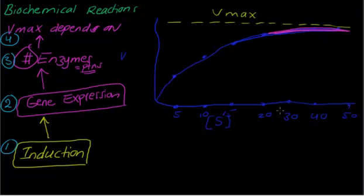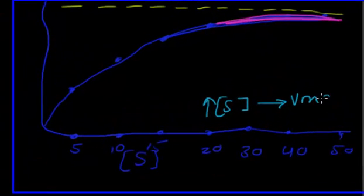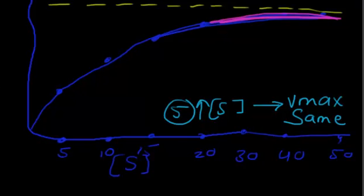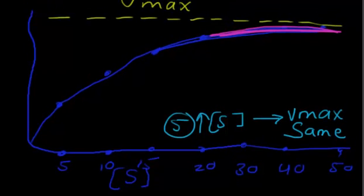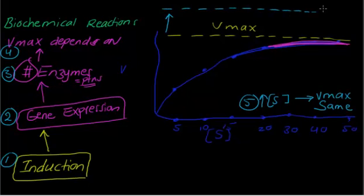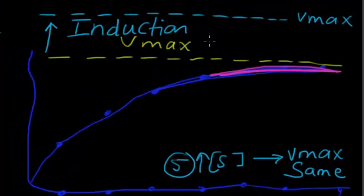How about substrate concentration? If you increase the substrate, Vmax remains the same — that is the fifth concept. Now, to show you how Vmax increases: the new Vmax moves from this level to a higher level. The only way to increase Vmax from this level to this level is by induction, which is the same as an increased number of enzymes, the same as gene expression.